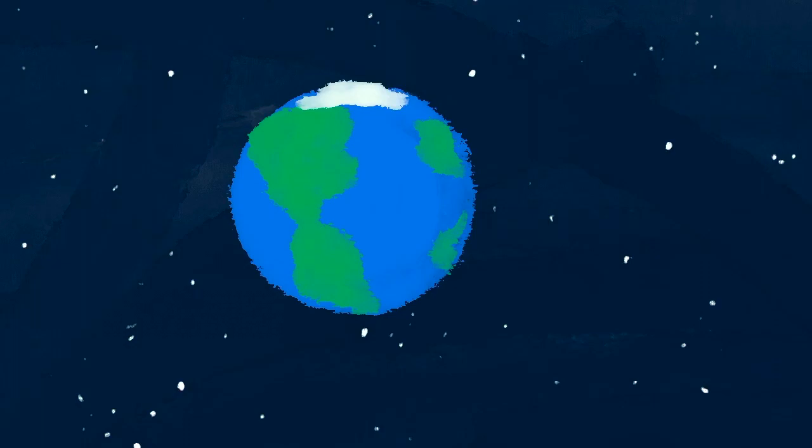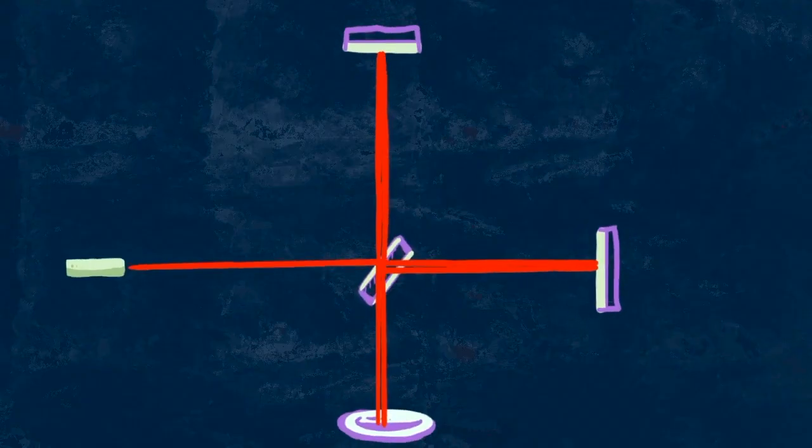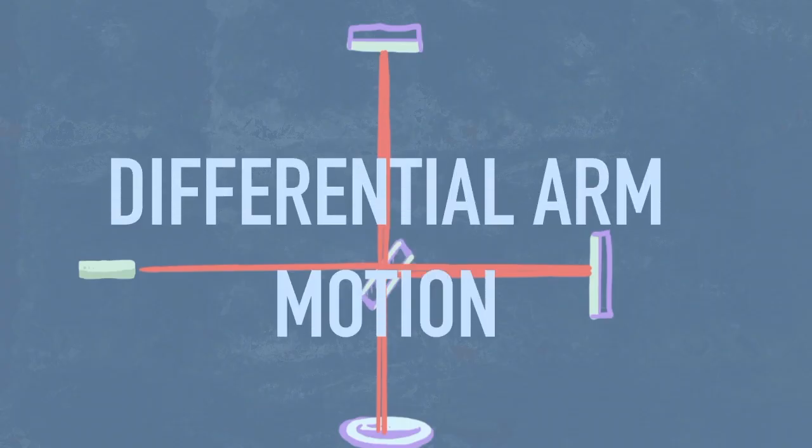Then a gravitational wave passes and the entire interferometer contorts like this. One arm gets stretched more and the other shrinks. This is called differential arm motion. The light in the longer arm has to travel further.